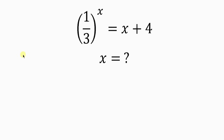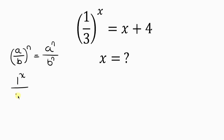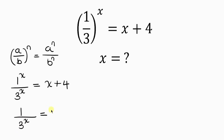Our first step will be to apply the law of indices that says when I have a over b all raised to the n, this is the same as a to the n all over b to the n. So this expression can be written as 1 to the x all over 3 to the x. We know that 1 raised to any power gives 1, so 1 to the x equals 1, all over 3 to the x, and this is equal to x plus 4.